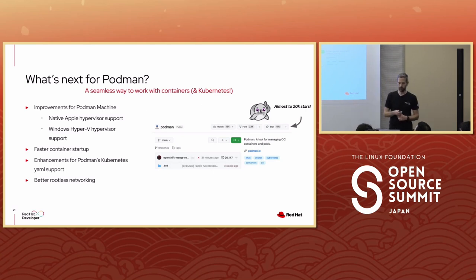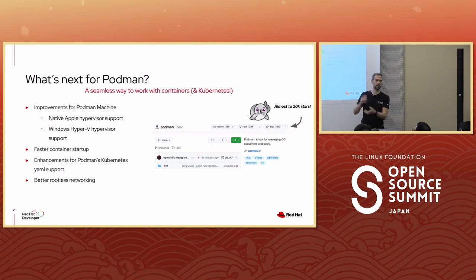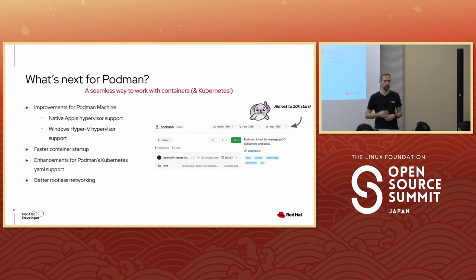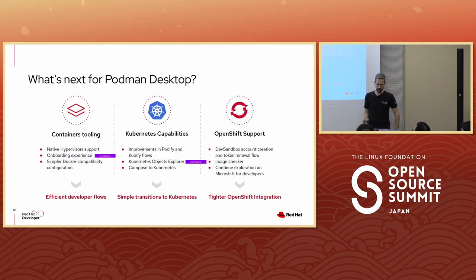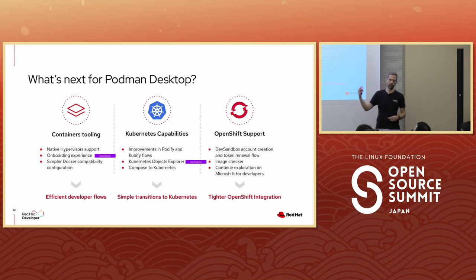Upcoming improvements include Hyper-V support on Windows, faster container startup, and enhancements for the Kubernetes YAMLs being generated. Right now it creates a pod YAML, but in Kubernetes it might be easier to work with deployments and services, so those could be generated in the future. Podman Desktop is open for suggestions, and since it's open source, contributions are welcome.